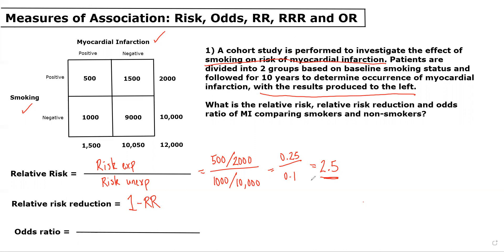So it makes sense that the question we're really asking is: among non-smokers, how much is their risk of MI reduced compared to smokers? So it makes sense that the relative risk would be non-smokers compared to smokers rather than smokers compared to non-smokers as we did before. For the relative risk reduction, we would do one minus the reciprocal of what we found — the risk among non-smokers divided by the risk among smokers. This would be equal to one minus 0.4, which equals 0.6 or 60%, meaning that non-smokers had a 60% lower 10-year risk of MI compared to smokers.